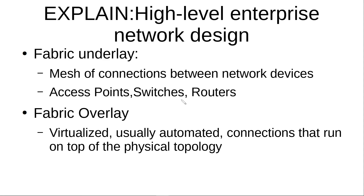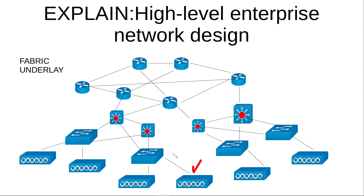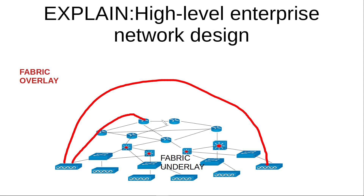You can also design your campus using the fabric design. The fabric is a mesh of connections between network devices — access points, switches, and routers. The fabric overlay consists of virtualized connections that run on top of your physical topology. Your physical topology — access points, switches, and routers connected together — forms the fabric underlay, while the fabric overlay creates tunnels automatically on the fly to enable communication between end users.